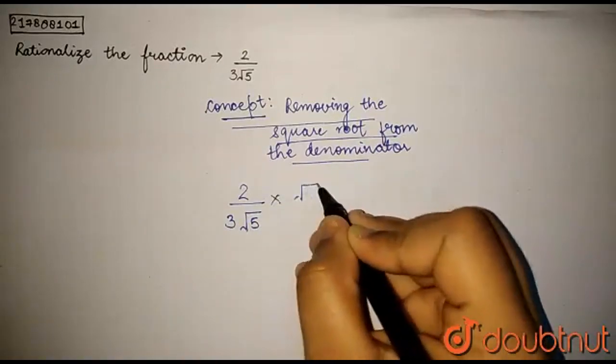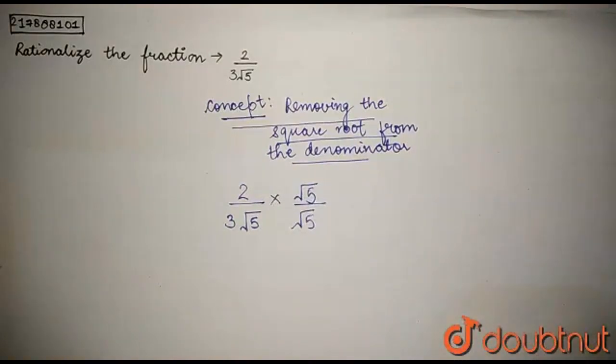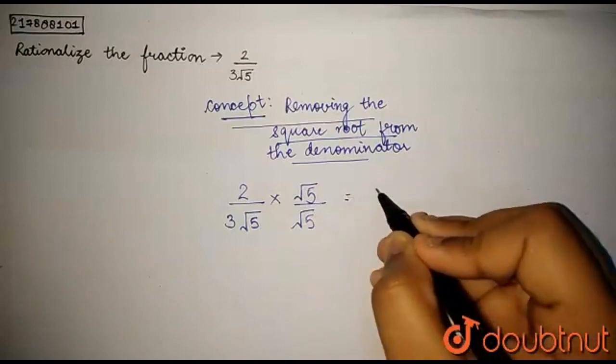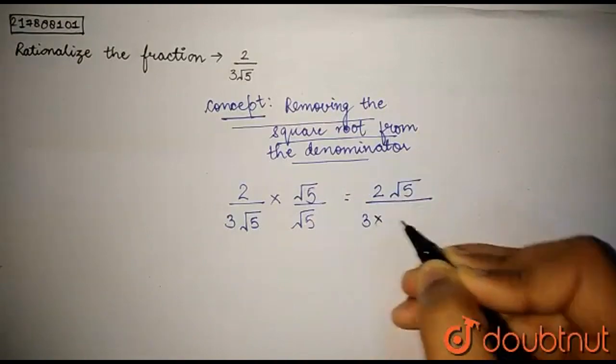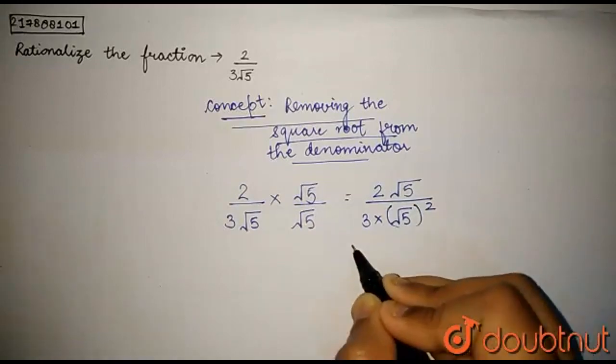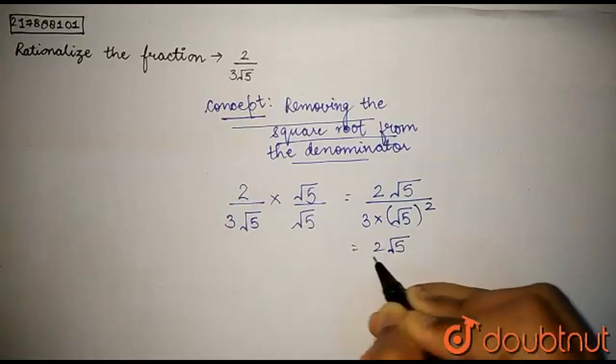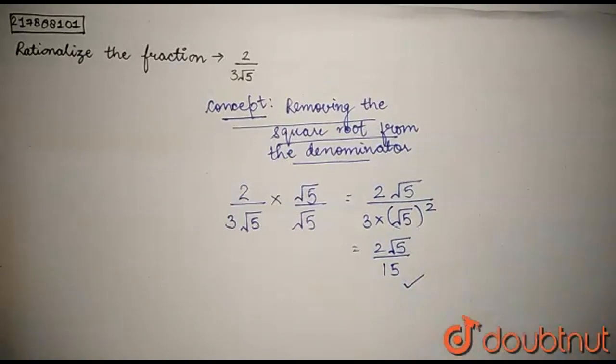we need to multiply root 5 in the numerator and the denominator, which gives us the answer as 2 root 5 upon 3 into root 5 whole square. Which can be written as 2 root 5 upon 15. And this is the answer. Thank you.